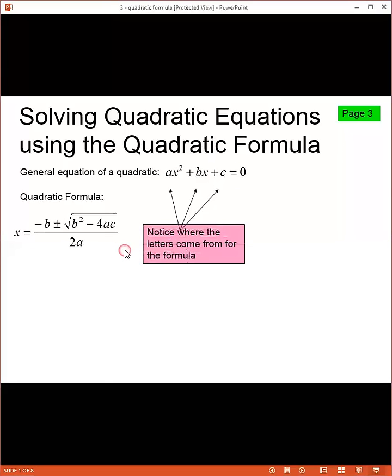It is important to notice where the letters come from. Notice the a is in front of the x to the second and the b in front of the x, and then the c is the term without a variable.